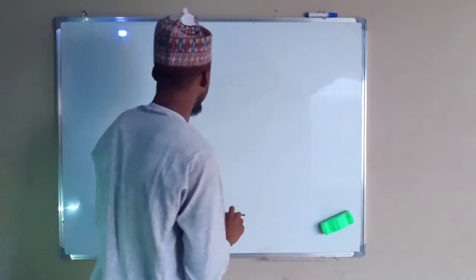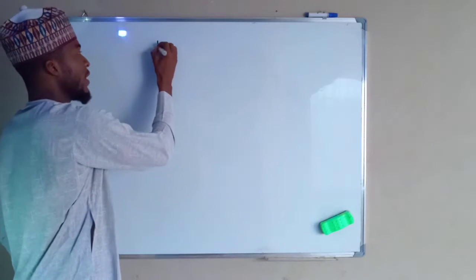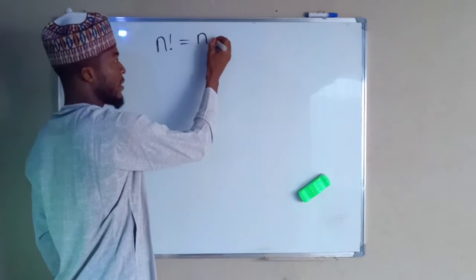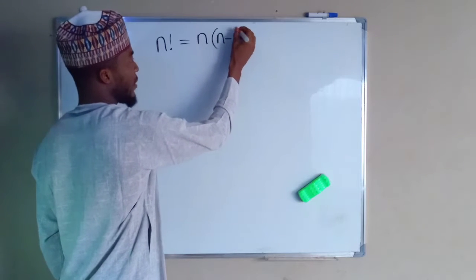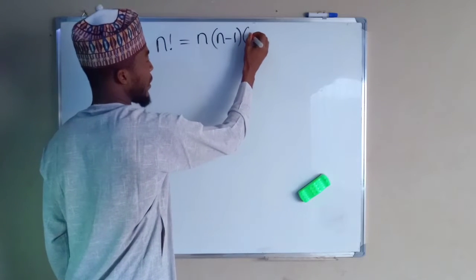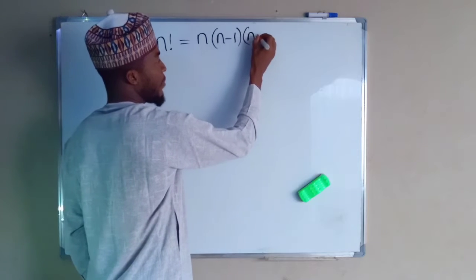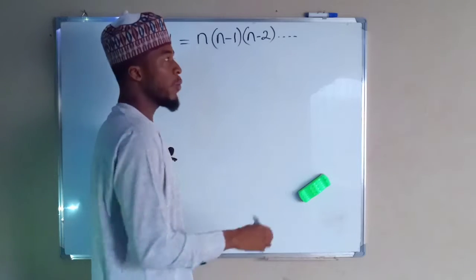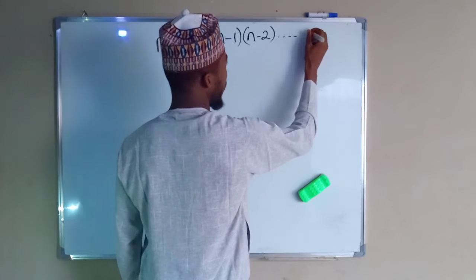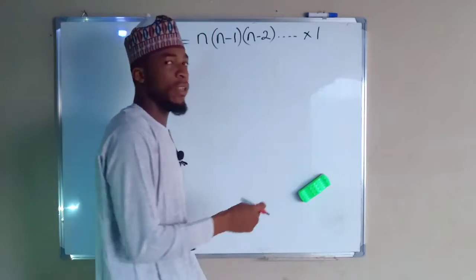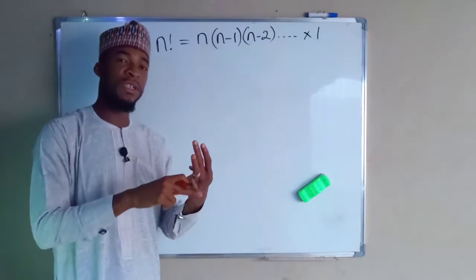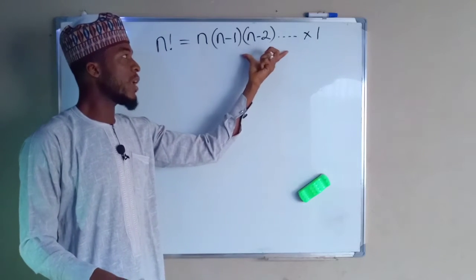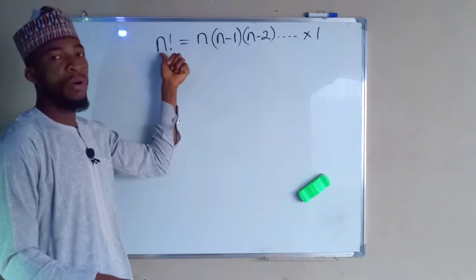First of all, let us define what it means by factorial. If you have n factorial, this means that n multiplied by n minus 1 multiplied by n minus 2. You keep on going reducing n by 1 down to 2 times 1. That is the last number. You keep on reducing the number by 1 till it reaches 1. And whatever you get by simplifying this is the value of n factorial.